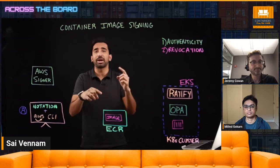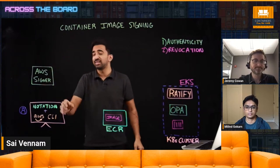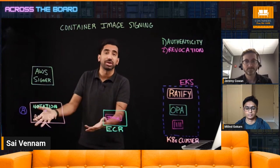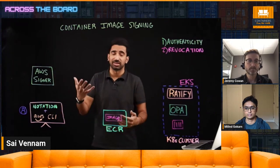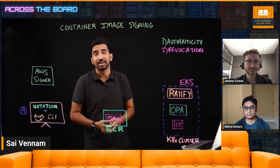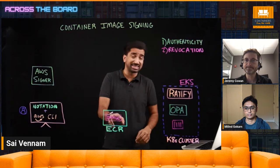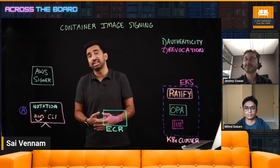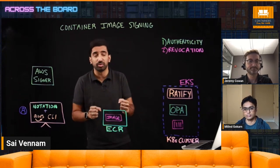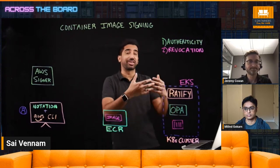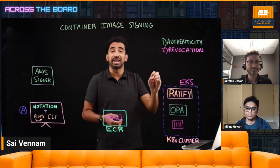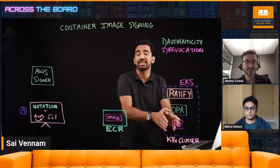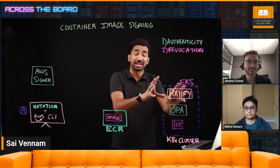Now that we understand the basics, let's explain some of the components. We've got Signer, a developer on their local machine working with the Notation CLI — part of the Notary Project — which helps us sign images. There's also the AWS CLI for authenticating against AWS services like Signer and ECR, Elastic Container Registry. We're assuming we already have a base image hosted in ECR, but that image is currently unsigned. We also have our Kubernetes cluster running on Amazon Elastic Kubernetes Service with Ratify and OPA, Open Policy Agent, inside it. The idea is that we want a running container image in the EKS cluster that has been verified and is a signed image — that's what Ratify and OPA help us do.